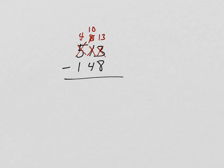So, let's go ahead and subtract. 13 minus 8 is 5. 10 minus 4 is 6. 4 minus 1 is 3. Now, I went through that pretty quick, but I wanted you to see that I had to do multiple borrowing steps there.